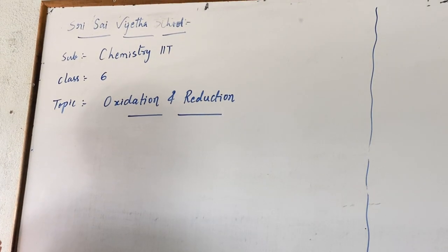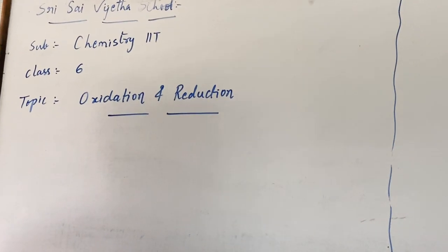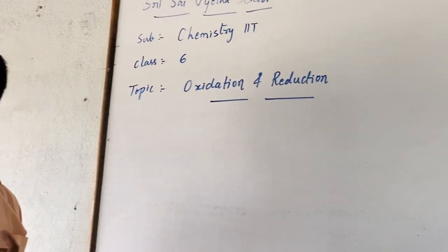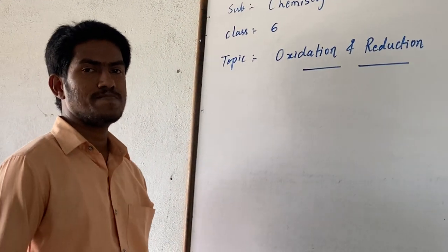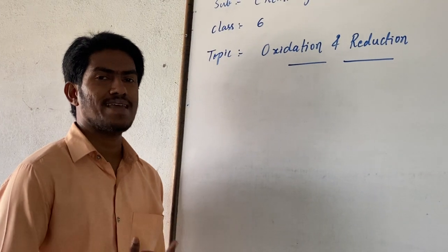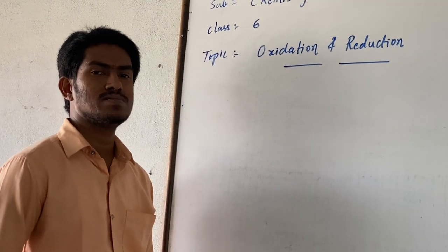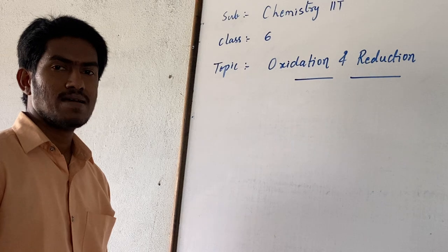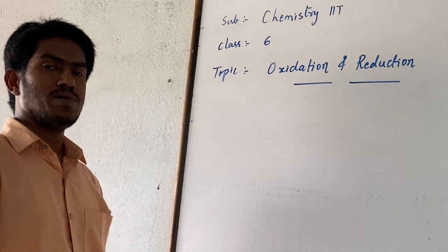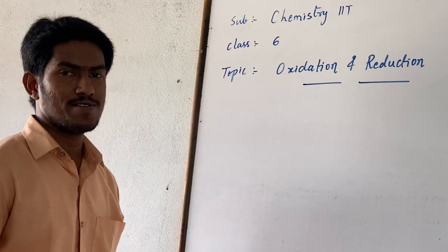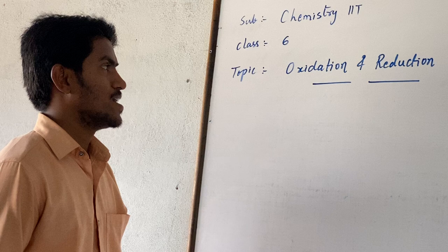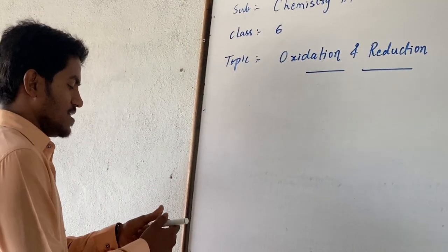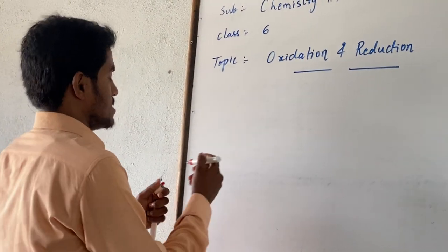Among those topics: oxidation number or oxidation state, the rules to find the oxidation number, various examples, oxidation number of radicals, and oxidation number finding based upon the structure. Now coming to the definition of oxidation reaction.